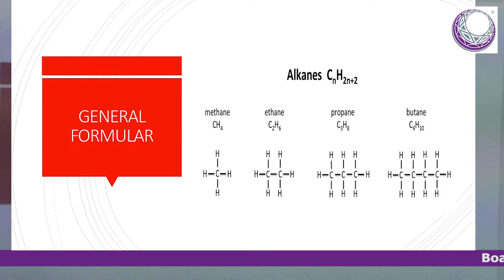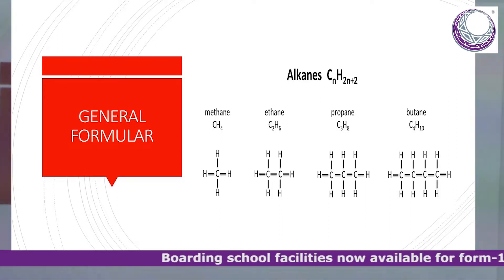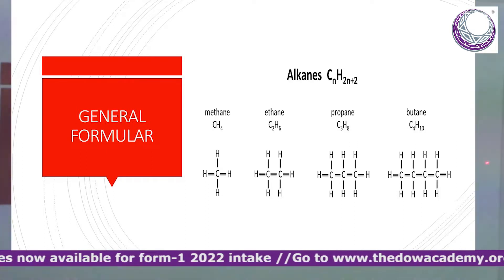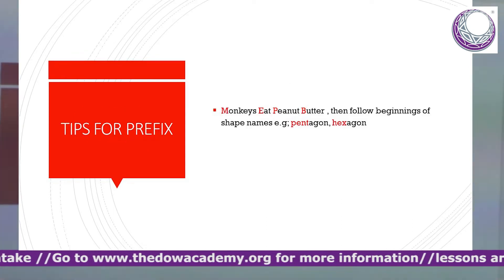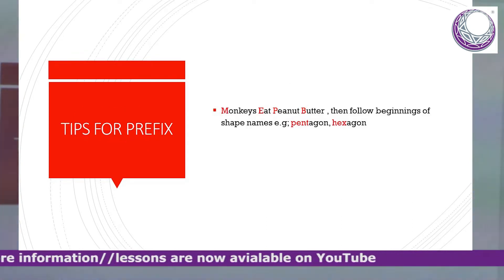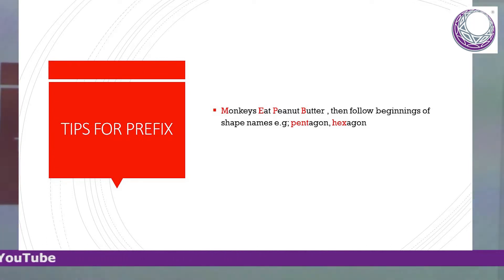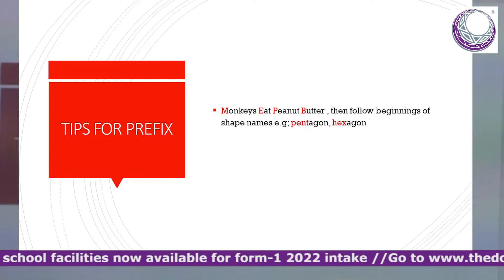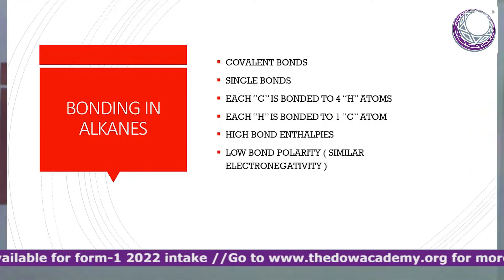Alkanes run from methane, ethane, propane, butane, pentane — which has got five carbon atoms — and hexane, which has got six carbon atoms. A trick for naming alkanes: 'monkeys eat peanut butter,' then follow the beginning of names like pentagon, hexagon, like that.